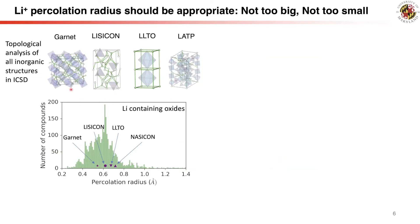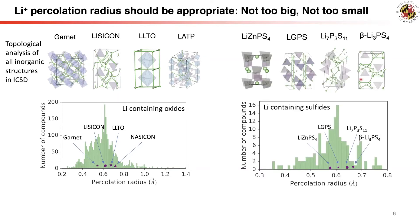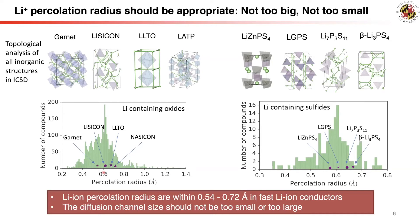Using topological analysis, we first analyze the percolation radius, which is the largest sphere that can pass through the crystal structures. By analyzing known superionic conductors — these oxides and these sulfides — we find they have a percolation radius in a small range of 0.54 Ångström to 0.72 Ångström. This result suggests an appropriate radius, not too small and not too large, is optimal for fast ion conduction.